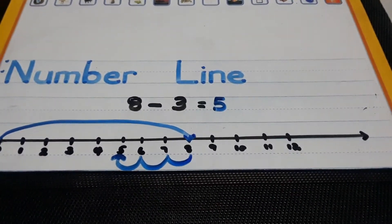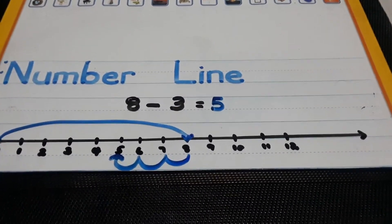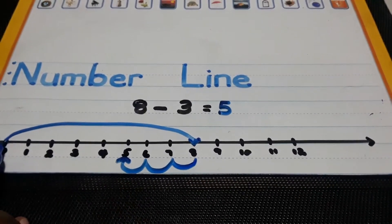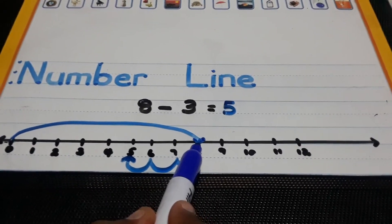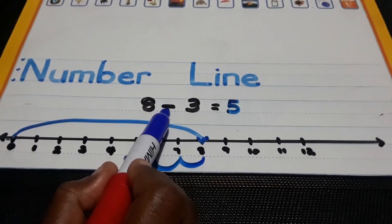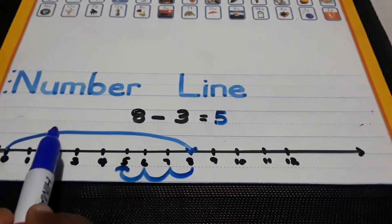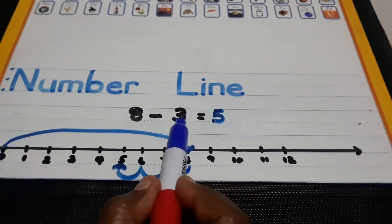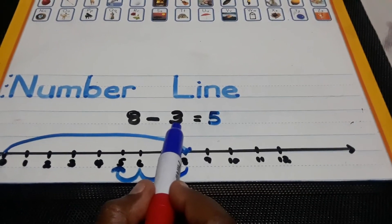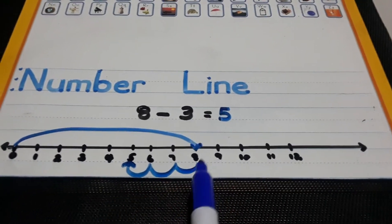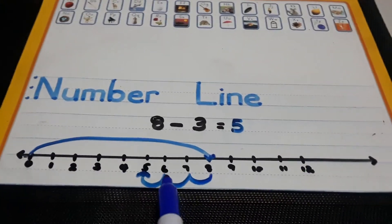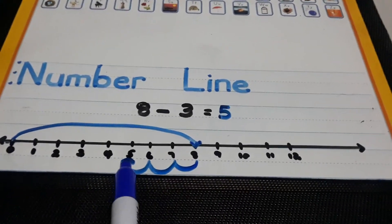So remember, boys and girls, when you are doing subtracting on the number line: look at your first numeral, jump to the first numeral, look at the sign which says minus — so you know you are going backwards. Look at the numeral after the minus sign. For example, this one is a numeral 3, so you go under the 8 and hop backwards 3 times.